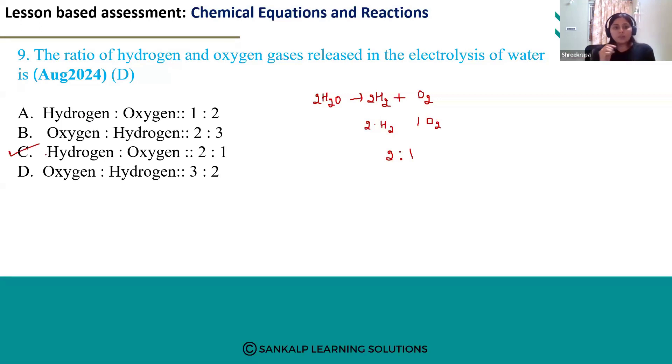While picking the answer, just verify the question and answer once again because if they ask oxygen to hydrogen ratio, then it should be 1 is to 2. If they ask for hydrogen to oxygen ratio, then the ratio will be 2 is to 1. Double verify the question and answer.